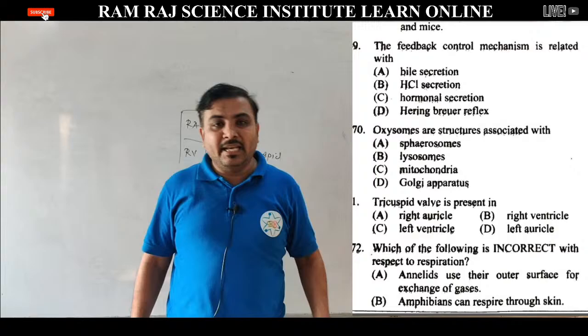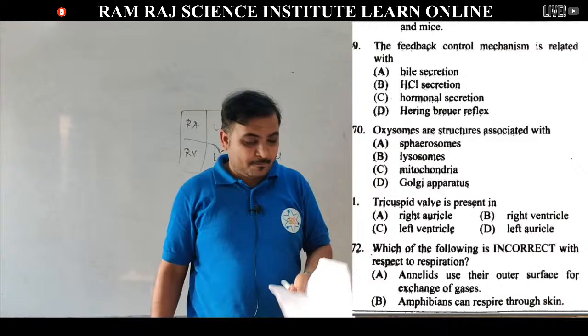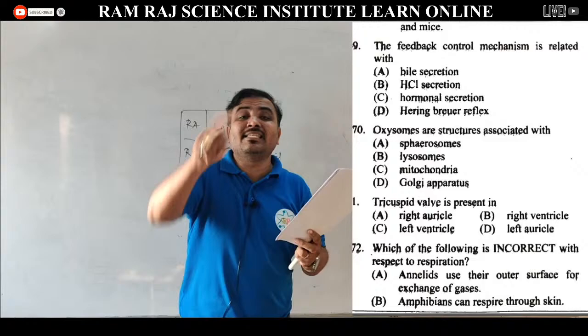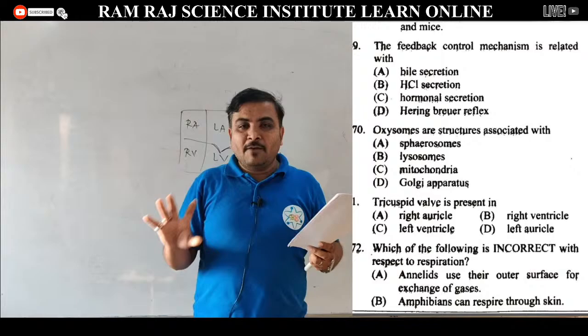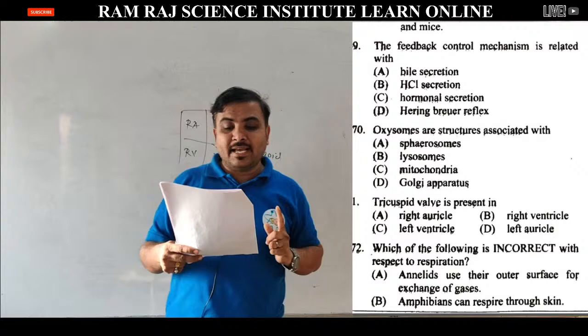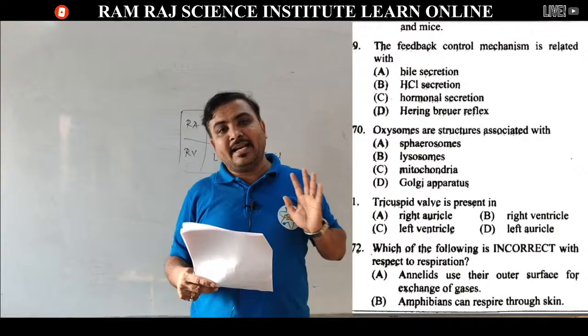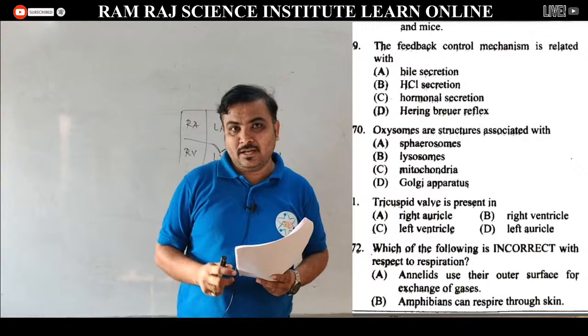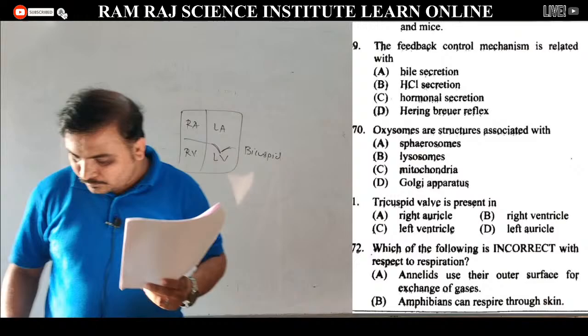सानिका का question आगया है about Saccharomyces in HGP. Question 68 के statement B में specifically कहा है कि HGP is involved in finding genes related to human diseases in yeast (Saccharomyces). Yeast की mapping की बात अलग है — लेकिन human disease को वहाँ map करके ढूंडा — ये गलत है. तो B wrong statement है.